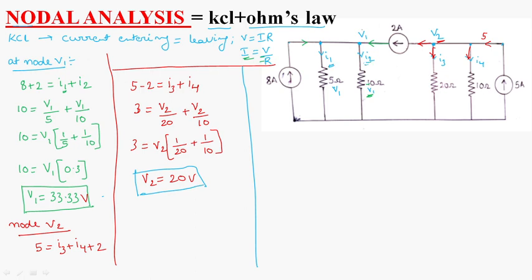Now we are finding out I1, I2, I3 and I4. So, what is I1? I1 is equal to V1 by 5 volts. What is V1? V1 is 33.33 by 5, which is equal to 6.66 volts. And similarly, what is I2? I2 is equal to V1 by 10 ohms, which is equal to V1 is 33.33 means 3.33 volts.